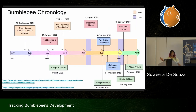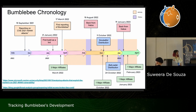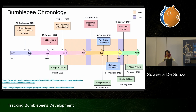Before we look at development timelines, let's look at a really short history timeline on Bumblebee — it will help us follow the presentation better. Bumblebee was first reported in March 2022 by Google TAG. The researchers observed this new loader being used by affiliates who were previously associated with Conti, and that is also how it got its name.